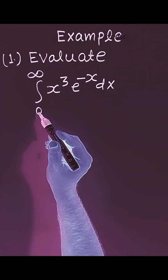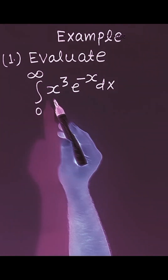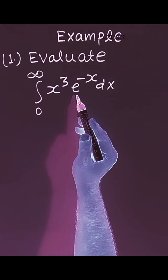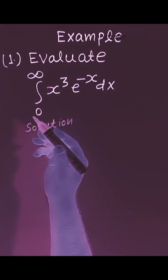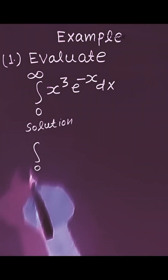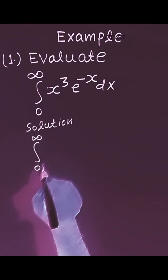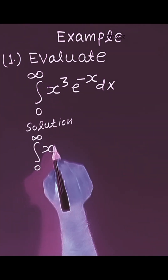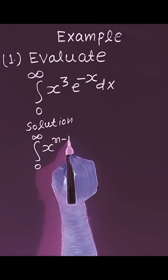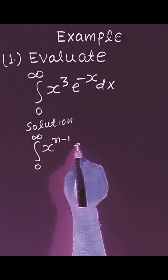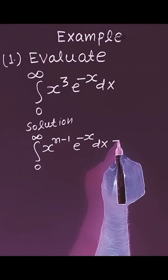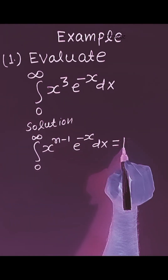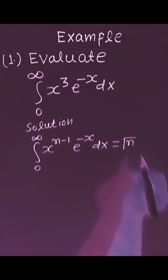Evaluate the integral from 0 to infinity of x cubed times e to the power minus x dx. By the definition of the gamma function, the integral from 0 to infinity of x to the power n minus 1 times e to the power minus x dx is equal to gamma n.